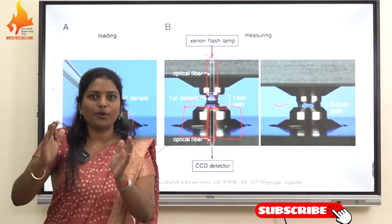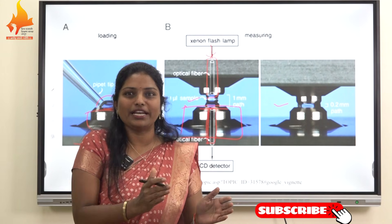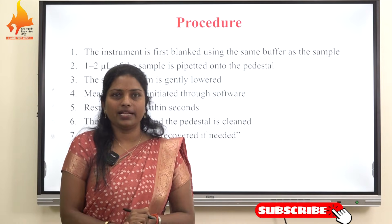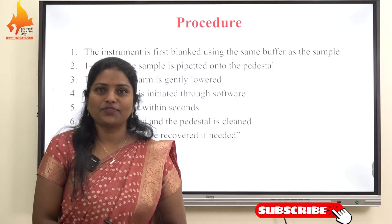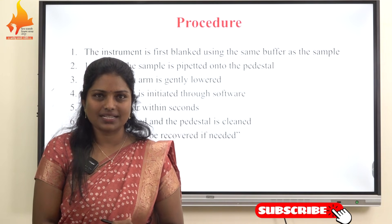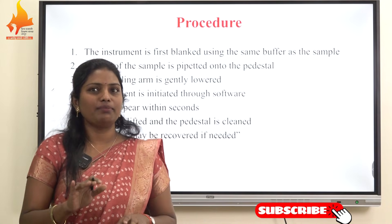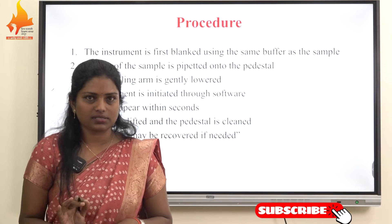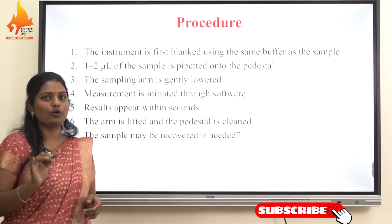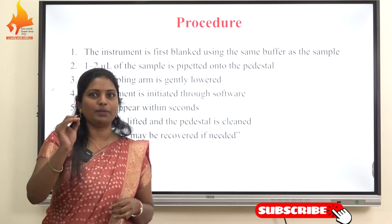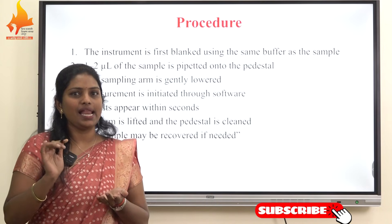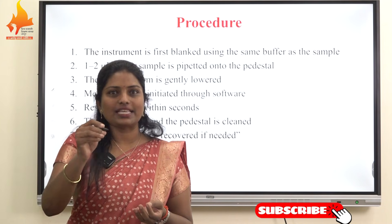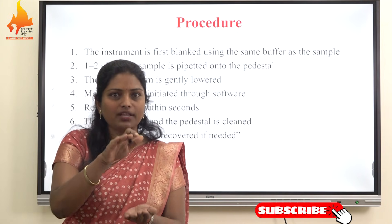The software instantly computes the concentration and purity ratio based on the preset extinction coefficients. The nanodrop analysis follows a simple and quick procedure. First, the instrument is blanked using the sample buffer or solvent present in the sample to eliminate background absorbance. Next, one to two microliters of sample is carefully pipetted onto the measurement pedestal, and the arm is gently lowered, allowing the sample to form a liquid column between the optical surfaces.